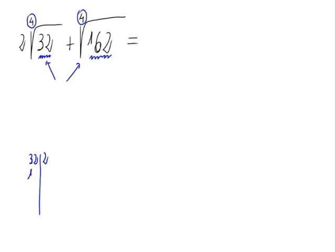32 divided by 2 is 16, divided by 2 is 8, divided by 2 is 4, divided by 2 is 2, divided by 2 again is 1.